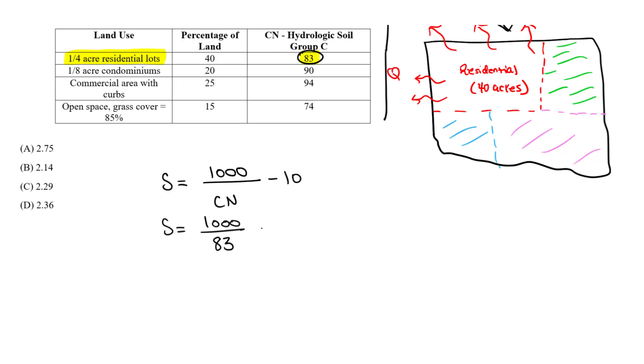So solving for S, I got around 2.048 inches. So we have our S value. With the S value, now we can solve for Q, which is what we want to find, the runoff in inches.